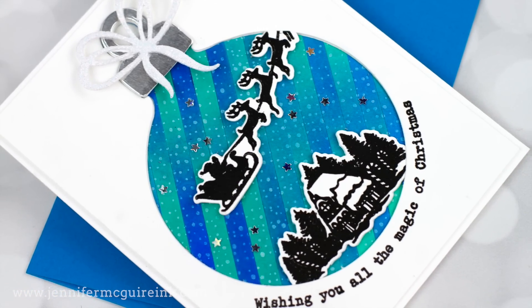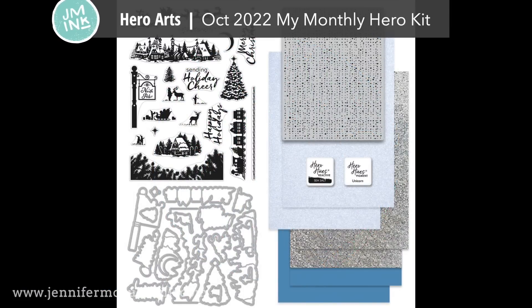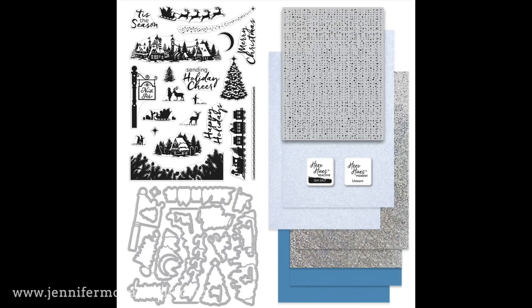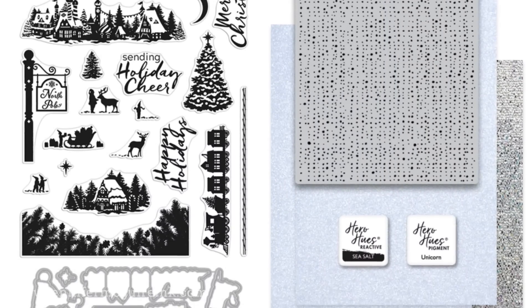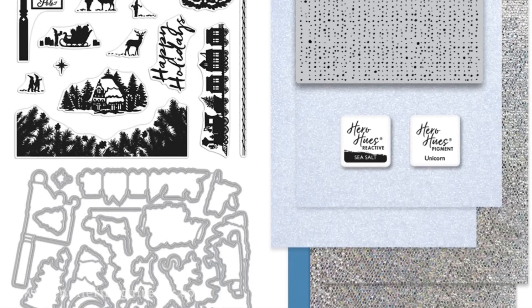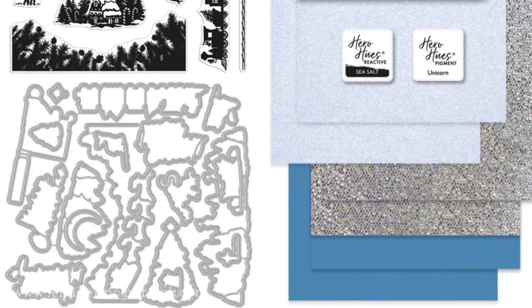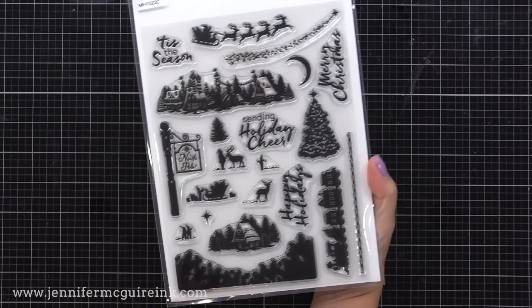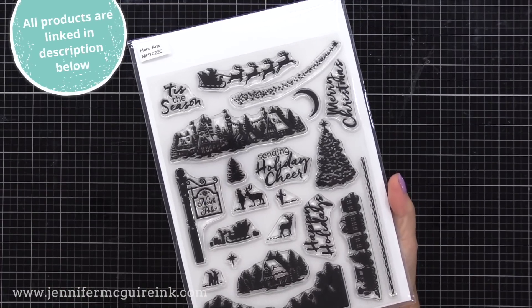I have two card examples for you. A great thing about this technique is you can use products you have, but I'm using the new Hero Arts October 2022 My Monthly Hero Kit. I really like the Hero Arts kits because the value is like twice what the cost is. This kit includes a six by eight stamp set, and the coordinating dies, a large cling stamp background stamp, two ink cubes, and some specialty paper.